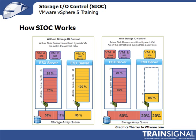On the right-hand side, with Storage I.O. Control enabled, you can see the resources and the proportions of those resources in the storage array queue have changed drastically. Virtual machine A has 1,500 shares allocated to it, whereas virtual machines B and C only have 500 each. So virtual machine A should be getting 60% of the storage array queue, and virtual machines B and C should only get 20% respectively. Before, virtual machine A was only getting 38% of the storage array queue, and virtual machine C was actually getting 50%, even though it only had 500 shares compared to 1,500 for virtual machine A. This is a before-and-after example showing how with ESX servers communicating to one another, the shares allocated to virtual machines give them the priority they deserve in the shared storage array queue.